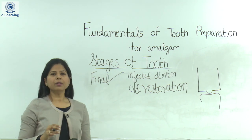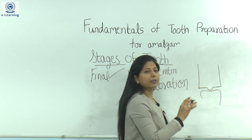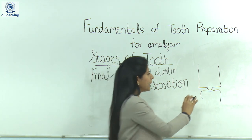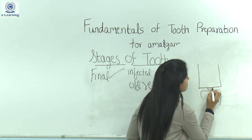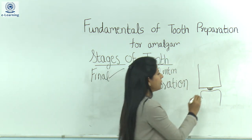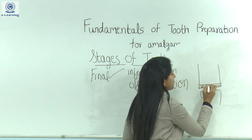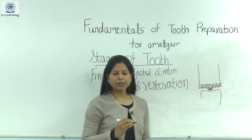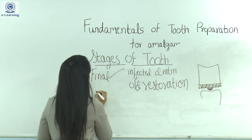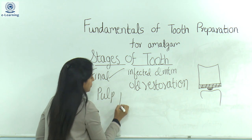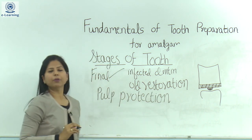Coming to the next stage: protection of the pulp. If the cavity is deep and very near to the pulp — if the distance is less than 0.5 mm — we protect the pulp by means of a cavity liner. Calcium hydroxide is generally used for this purpose. Over it we give a base of either zinc phosphate, zinc polycarboxylate, or GIC, and over that the restorative material is placed. This was pulp protection.